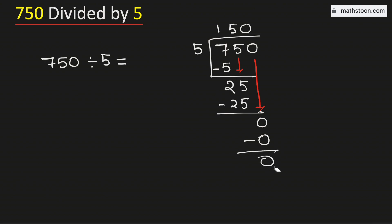As we have got the remainder 0, so we will stop. Therefore, 750 divided by 5 is equal to 150. And this is our final answer.